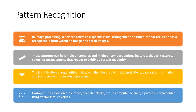Some simple examples can be the colors in clothes or speech patterns. In computer science, a pattern is represented using vector feature values. For instance, a shirt with a specific pattern of boxes or stars all over it is a pattern we can recognize. Even a voice has a pattern — you can identify a person's voice because of specific similarities they consistently present. So, identifying regularities helps in making predictions, categorizing information, and improving the decision-making process.